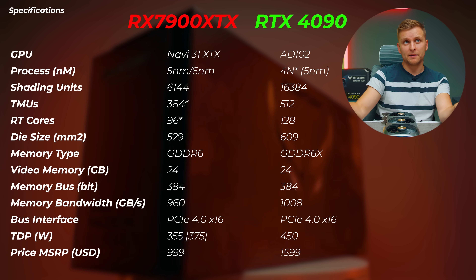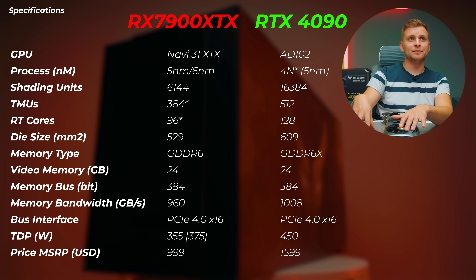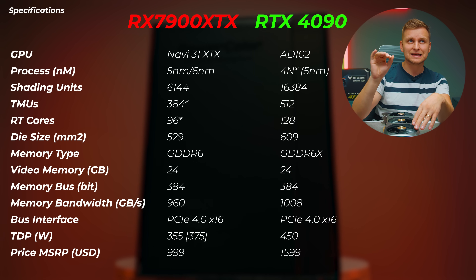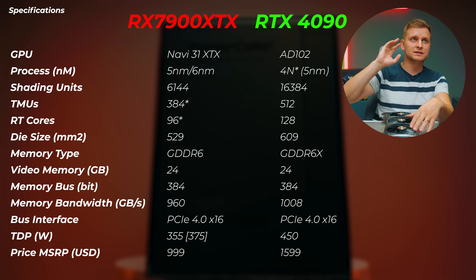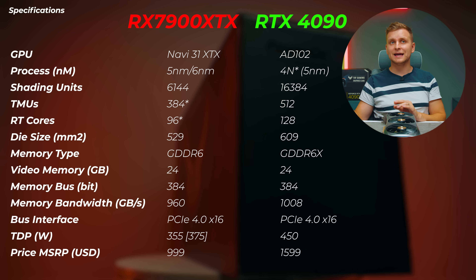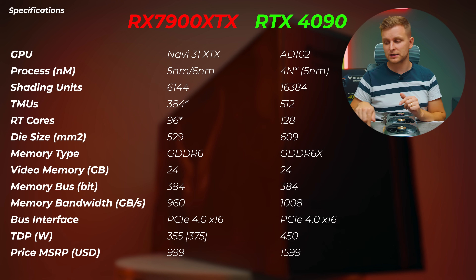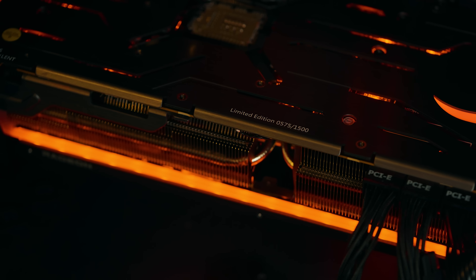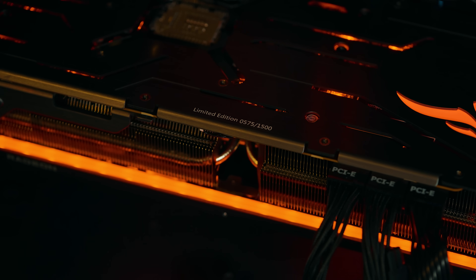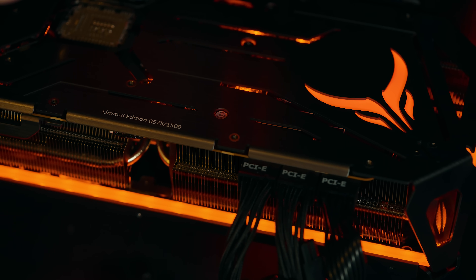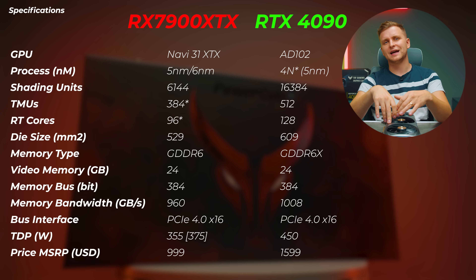The 4090 uses GDDR6X memory. Both cards have 24GB of VRAM, the memory bus width is about the same, but memory bandwidth is a bit higher on the 4090 — 1,008 GB/s versus 960 GB/s on the XTX. They use the same bus interface. On power consumption, Nvidia pulls about 450W while the XTX is rated at 355W. The card I'm using is the PowerColor Red Devil Limited Edition, which is slightly overclocked and pulls 375W — about 20W more than spec.